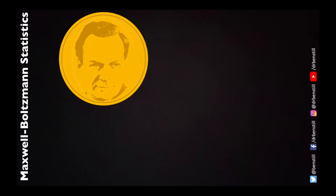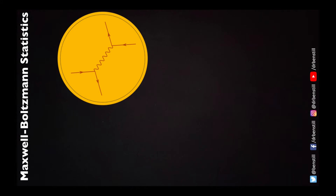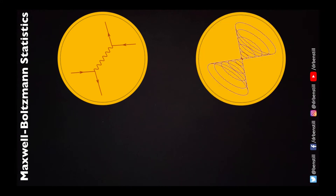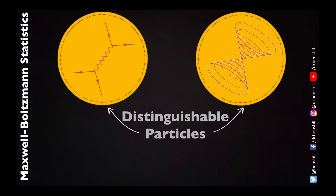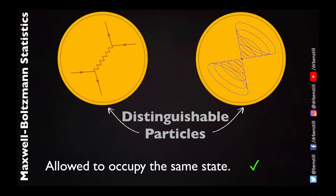Maxwell-Boltzmann statistics is the statistics which underlies classical particles — particles just like those coins which are easily identified. We can have one coin with a certain head and tail and another coin with a different head and tail. They are distinguishable from one another no matter what state they're in. And they're also allowed to occupy the same state, which means two particles can both be tails and two particles can both be heads. That's perfectly allowed classically.